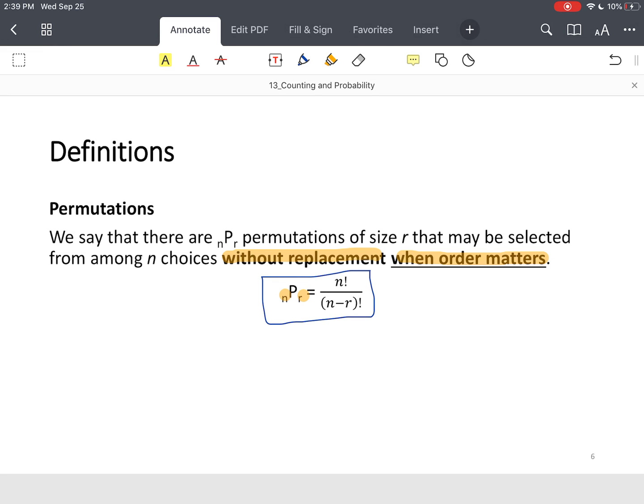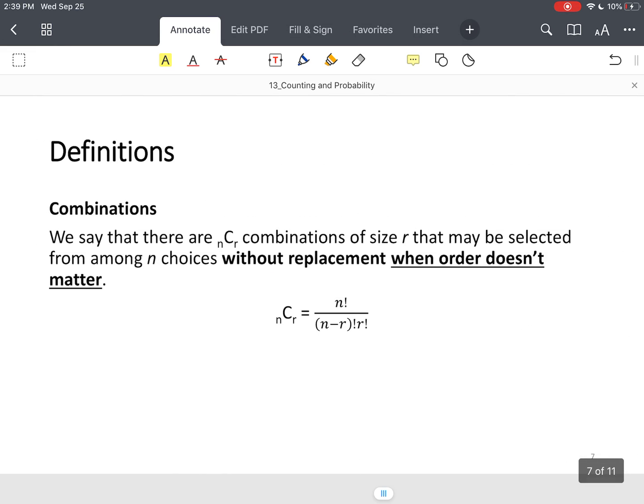And we're going to contrast that with combinations. We say that there are nCr combinations of size r that may be selected from among n choices. Now that looks just like permutation. The only difference is that order doesn't matter.